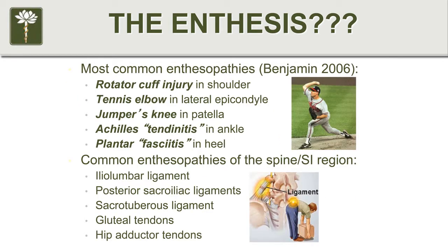When talking about enthesopathies — now that you have this slightly different concept of an enthesis as opposed to just a simple tendon or ligament — where do you find these enthesopathies? A lot of common injuries: rotator cuff, tennis elbow, golfer's elbow, jumper's knee, Achilles tendonitis, plantar fasciitis. These are the most common musculoskeletal injuries, and we see this stuff every day.